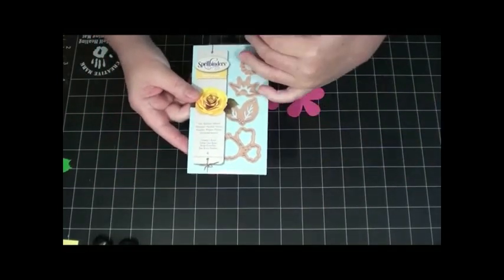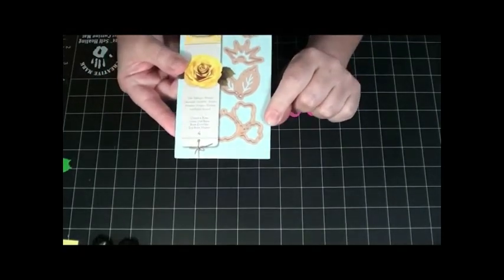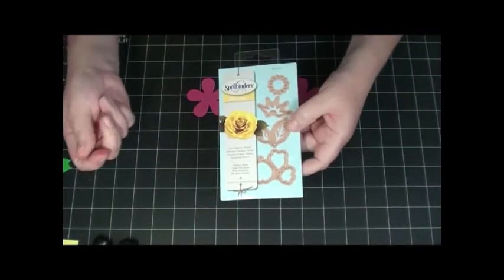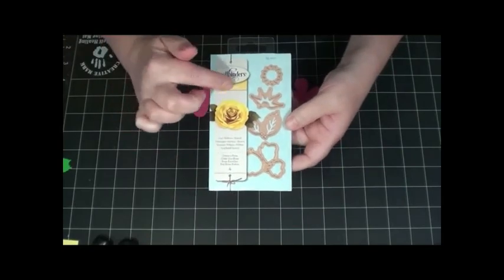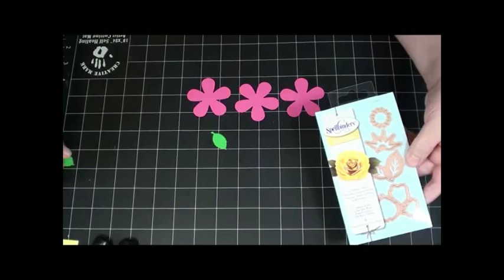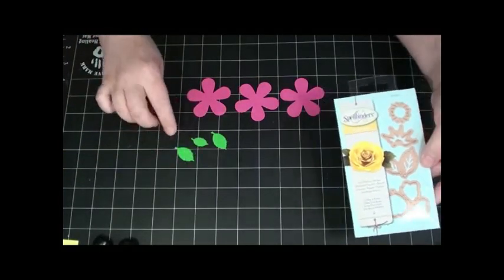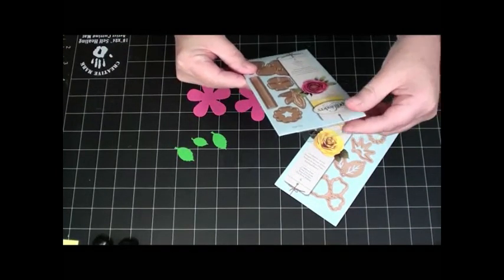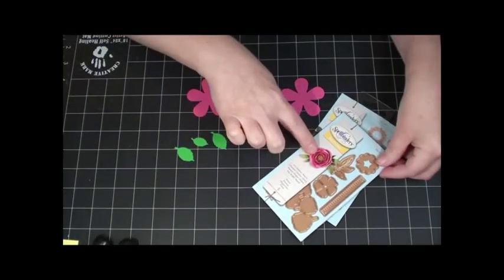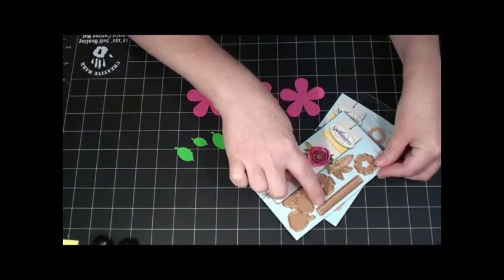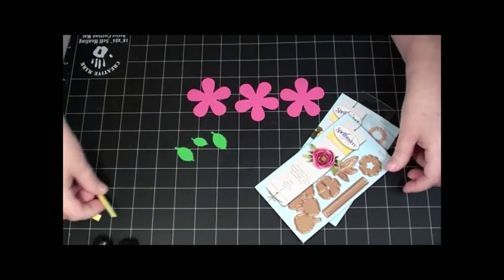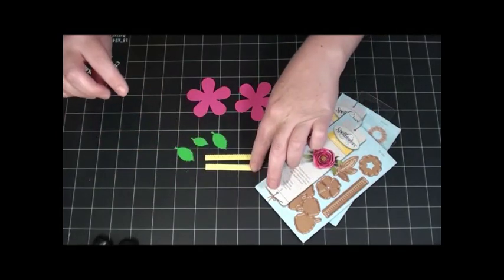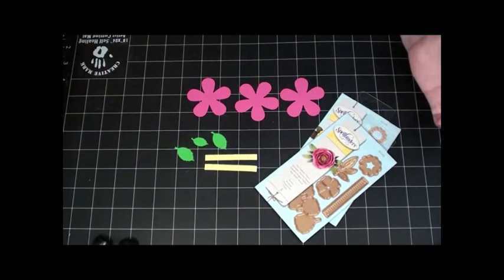I like Spellbinders Die Delights dies. I use them a lot for my flowers. They're kind of a pain in die-cutting because you have to die-cut all these petals, and sometimes they'll only give you one petal and the flower will need five or six. But out of this, all I used were the leaves. I cut three leaves.